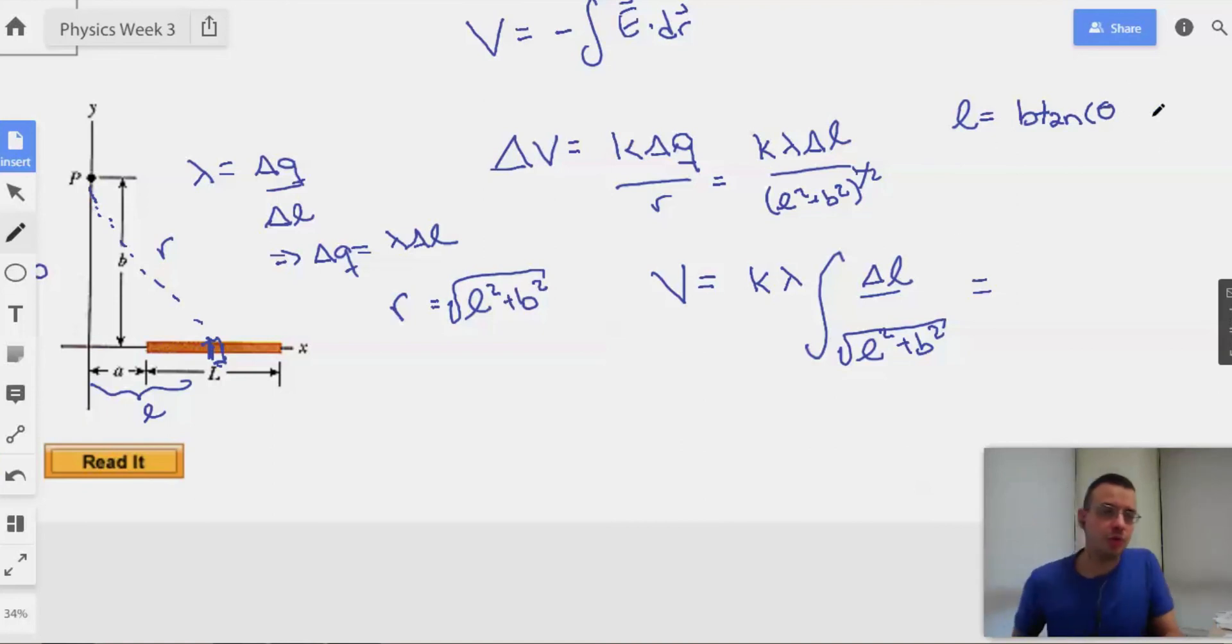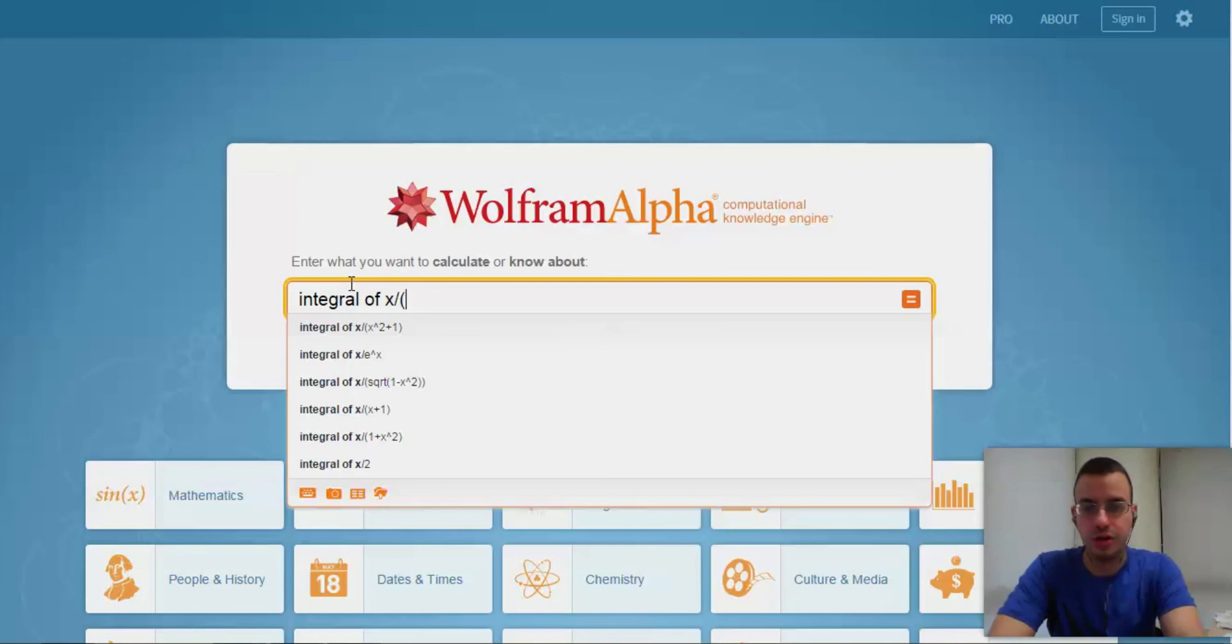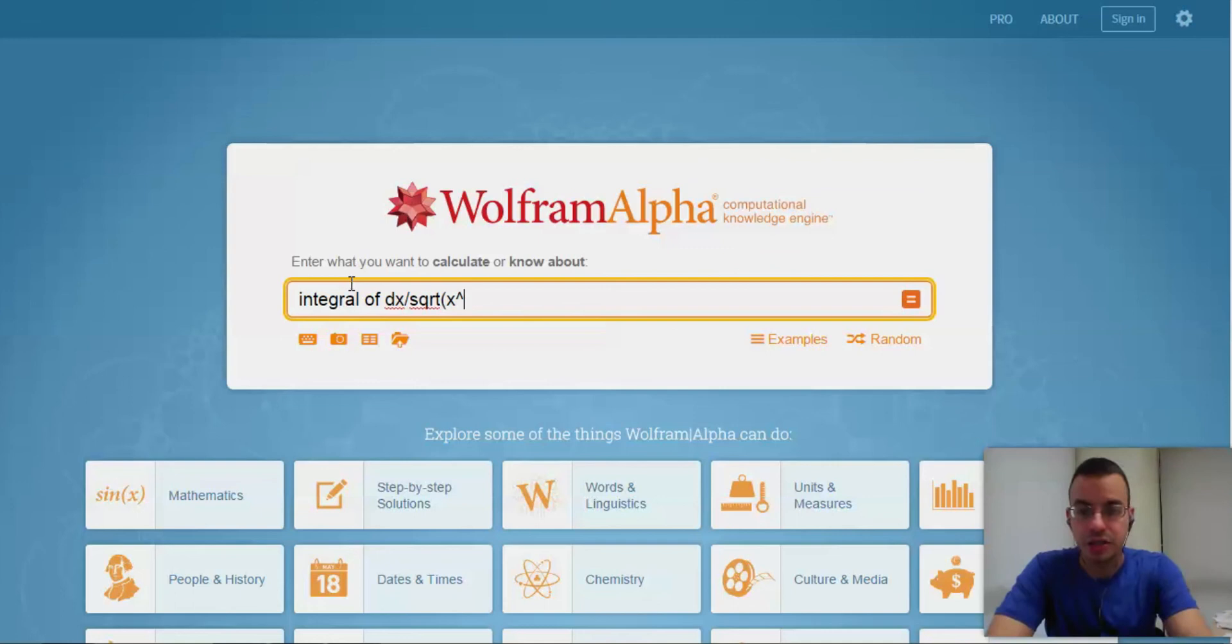And then we would work through that and come up with an answer. I don't want to do that. I'm gonna use the magical Wolfram. I don't think they would give you an integral this difficult on the exam. So, I'm gonna phrase it though as the integral of dx over square root of x squared plus a squared.